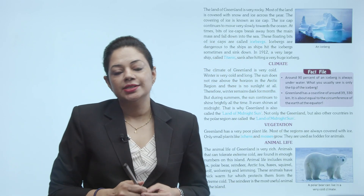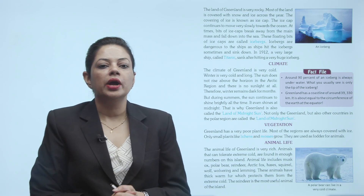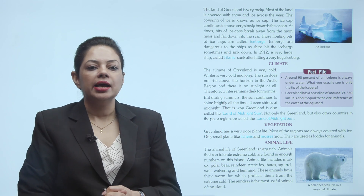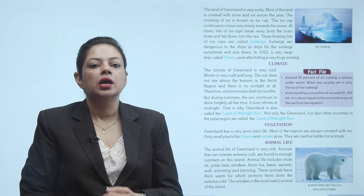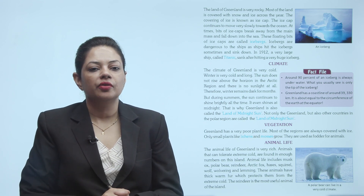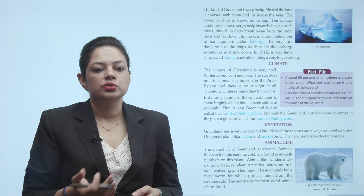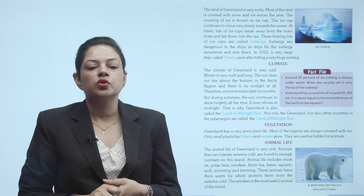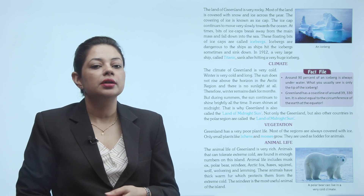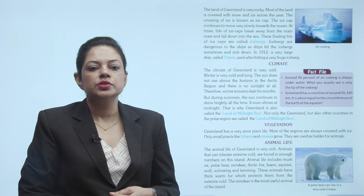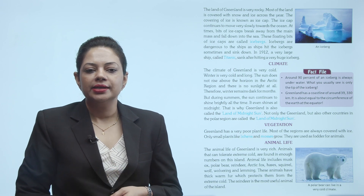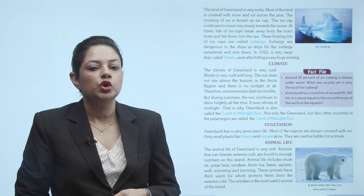The land of Greenland is very rocky. Most of the land is covered with snow and ice across the year. The covering of ice is known as ice cap. The ice cap continues to move very slowly toward the ocean. At times, bits of ice caps break away from the main mass and fall down into the sea. These floating bits of ice caps are called icebergs. Icebergs are dangerous to ships, as ships hit the iceberg sometimes and sink down.